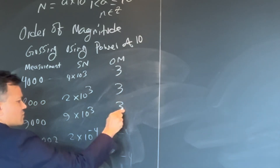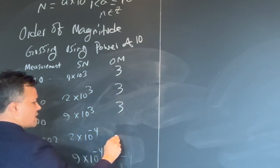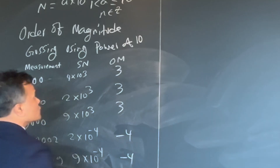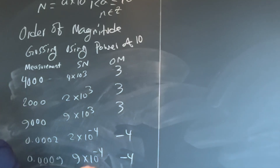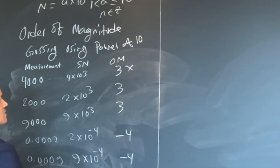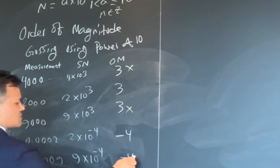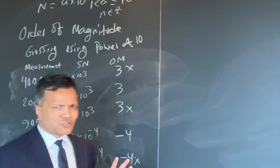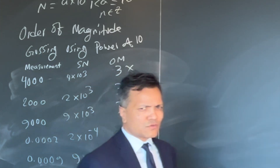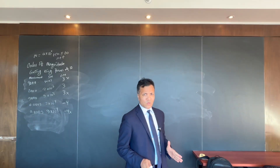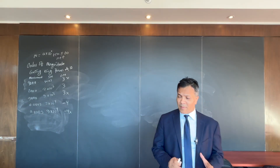The powers of 10 are 3, negative 4, and negative 4. Some of these are wrong. So how do we know when to round? Let's learn the rounding rules for order of magnitude and then fix them.